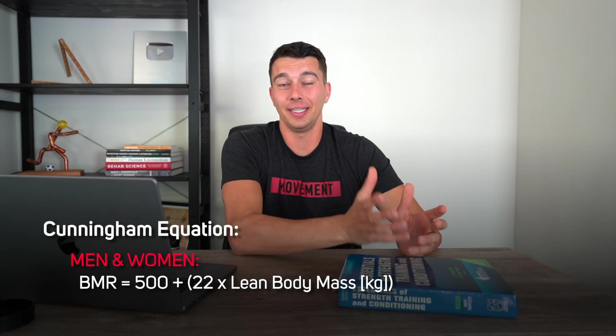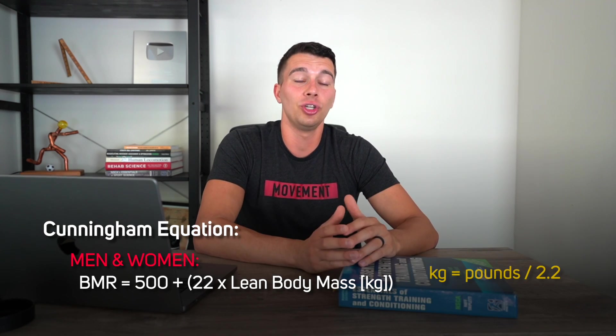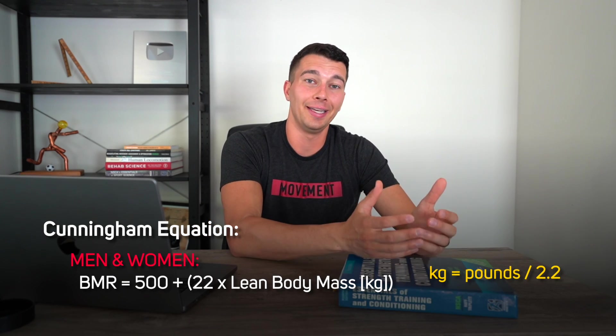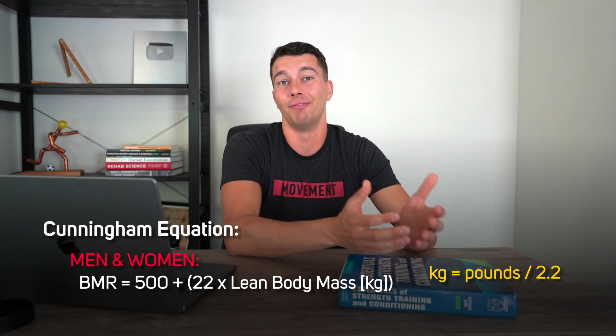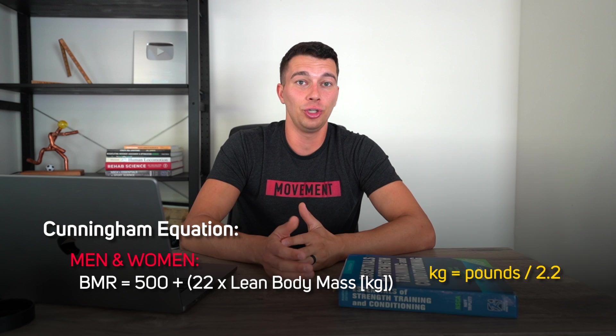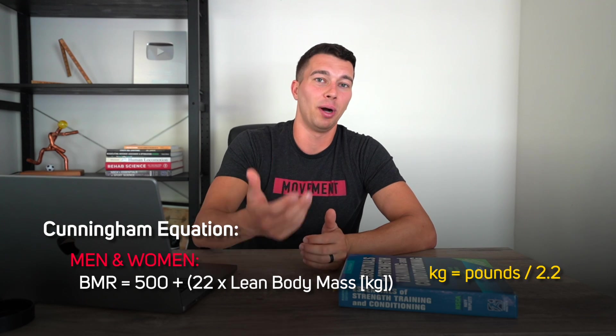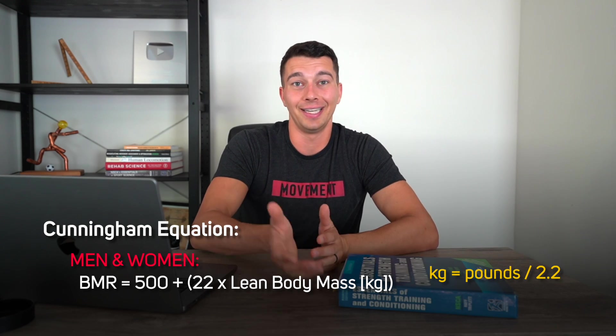Secondly, on the CSCS exam, you're typically given weight in both pounds and kilograms, but if you need to convert, divide the weight in pounds by 2.2 to get kilograms. For example, 160 pounds divided by 2.2 is about 73 kilograms.